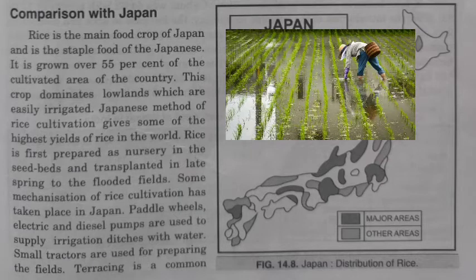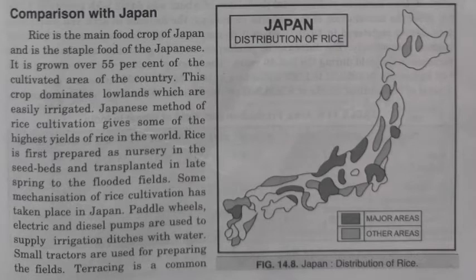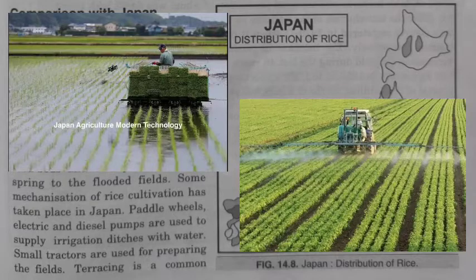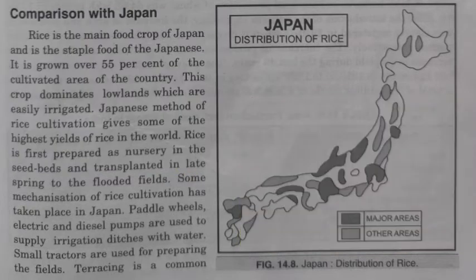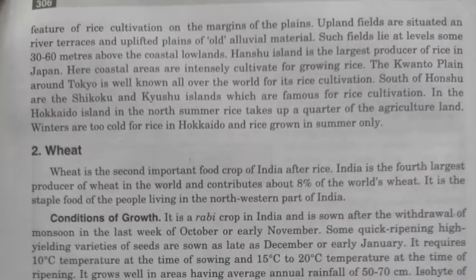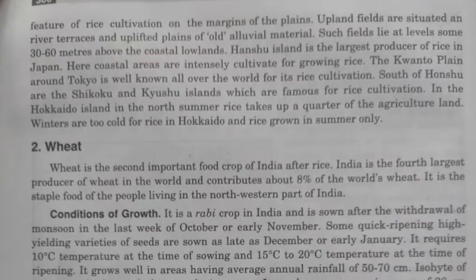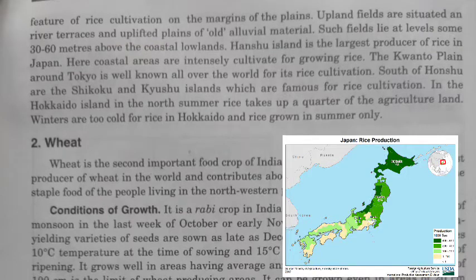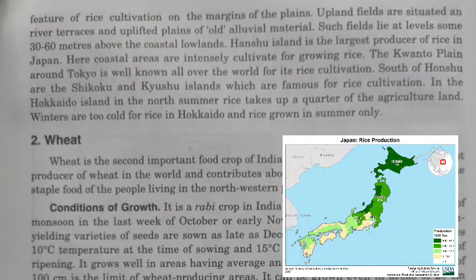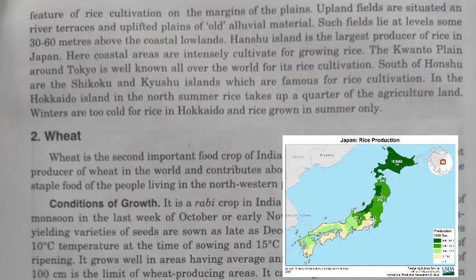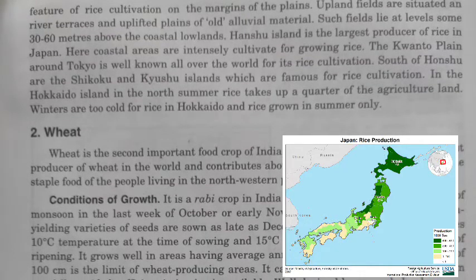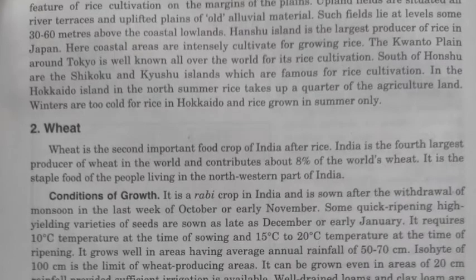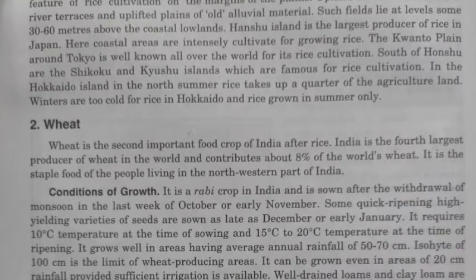In the transplantation method, seedlings are cultivated in nursery beds and then transplanted into flooded fields during spring. Mechanization of rice cultivation has also taken place in Japan, and terrace farming is very common there. Major rice-cultivating areas in Japan include Honshu Island, which is the largest producer, the Kanto Plain around Tokyo, and Shikoku and Kyushu islands.